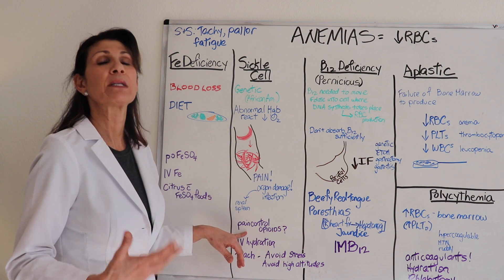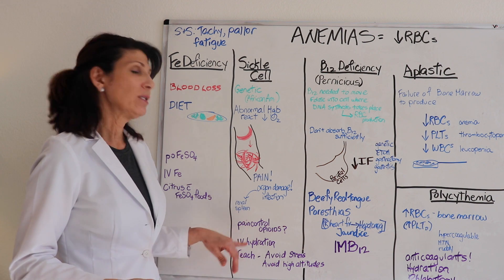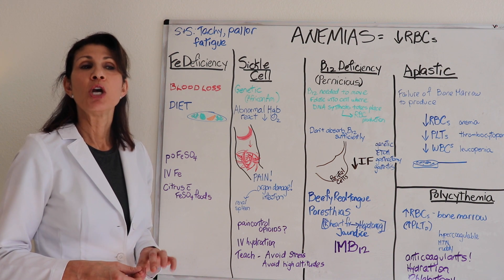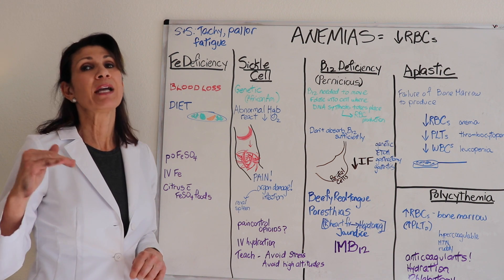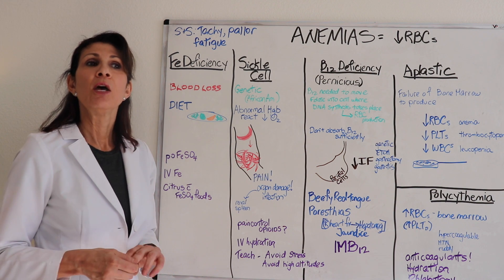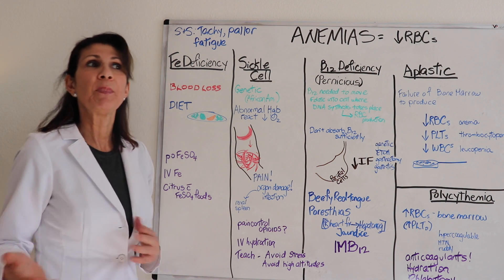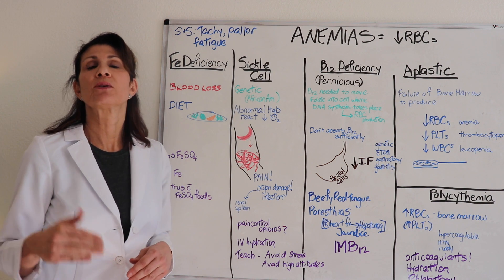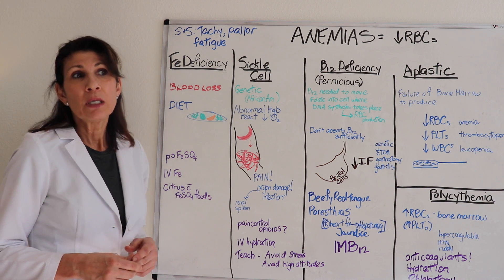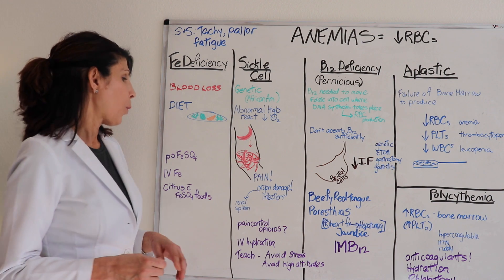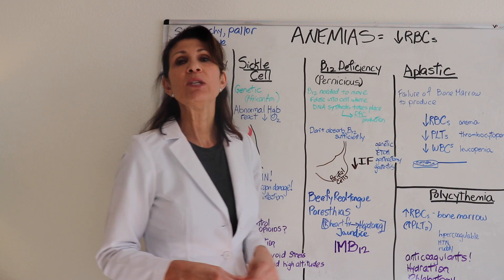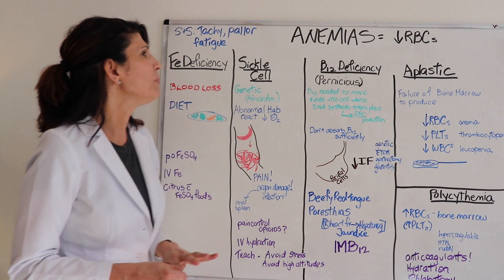When patients come into the acute care facility with an exacerbation or sickle cell crisis, opioids are generally used because the pain is so severe. These patients may have a very high tolerance to opioids — not because they're addicted, but because they may be taking PO forms of opioids at home.